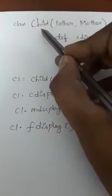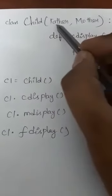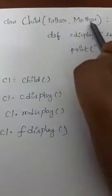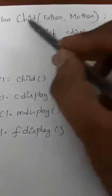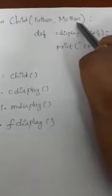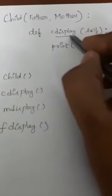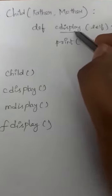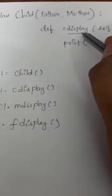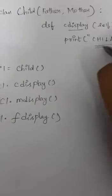This is my derived class. Inside the derived class I am just passing father comma mother, because the child class is acquiring the properties from both the father class and the mother class. Inside that, I am declaring a method called c_display — child display. f_display means father display, m_display means mother display, c_display means child display. Here I am printing a message called 'child'.